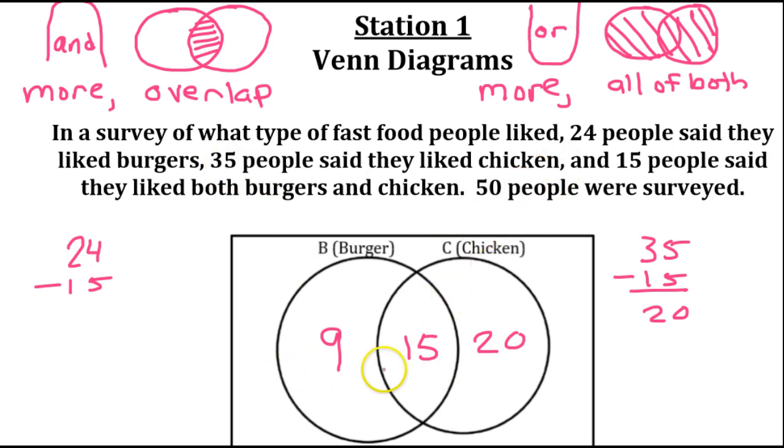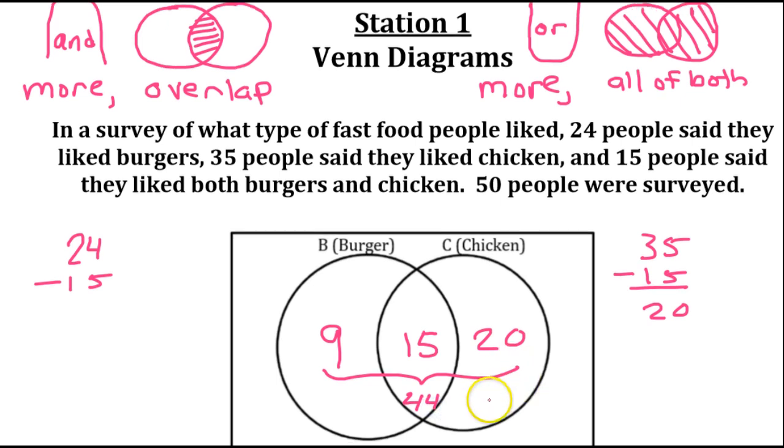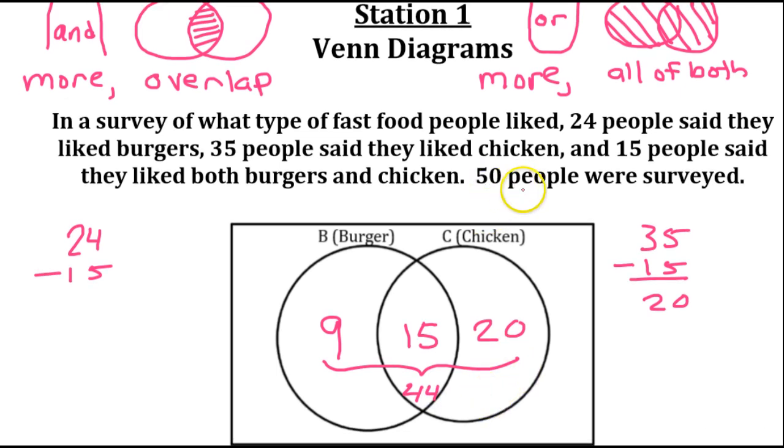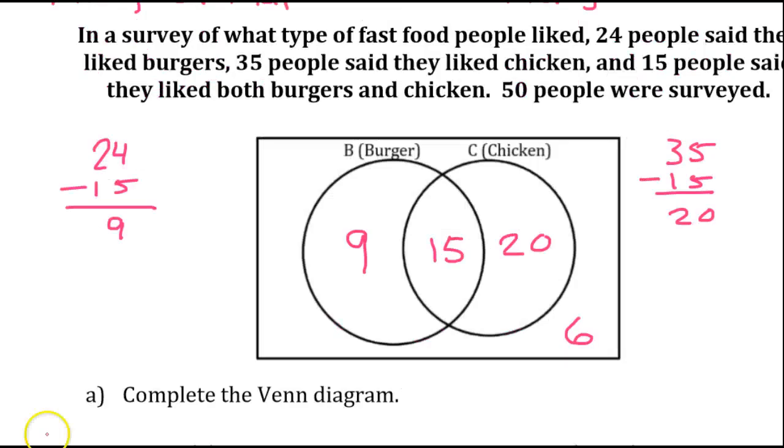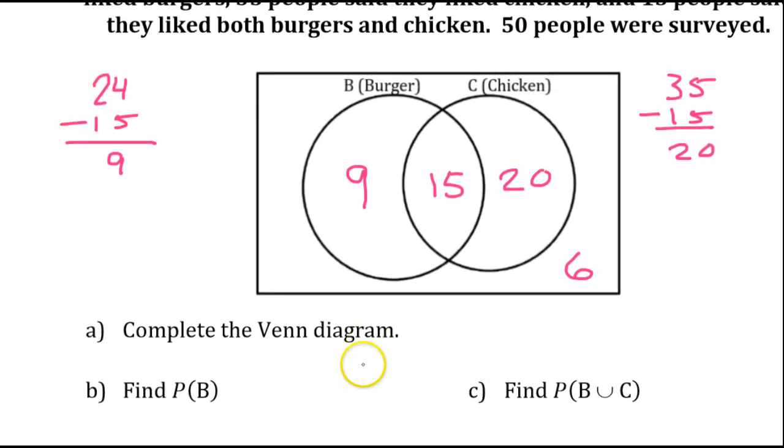Now, if you add up all of these numbers, 25 and 15, that's 35, plus 9 more is 44. So, looking at these numbers, so far, we've got 44 people. But, there are 50 people in the survey. That means that there are 6 other people. There are 6 people who like neither burgers nor chicken. And, that 6 goes right here in the Venn diagram.